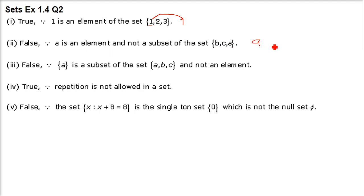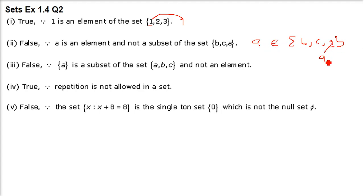Next: a ⊆ {b, c, a}. Here a is an element, so you can write 'belongs to' (∈), not subset (⊆). You cannot write a subset. If you want to make it a subset, take a out and put a brace — {a} — now it becomes a subset. But a as an element belongs to this set; it is not a subset.